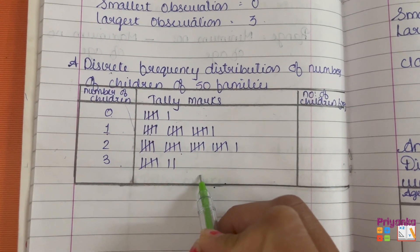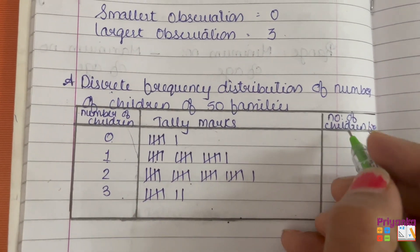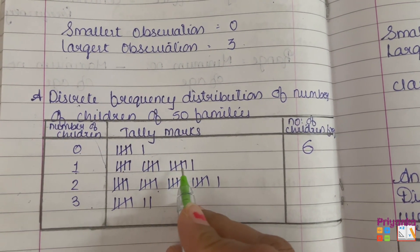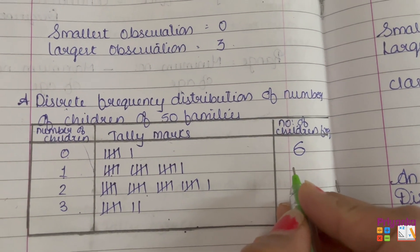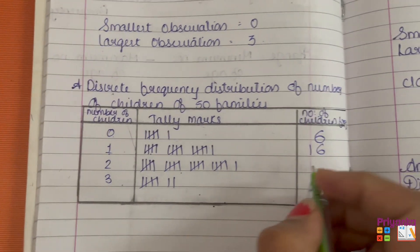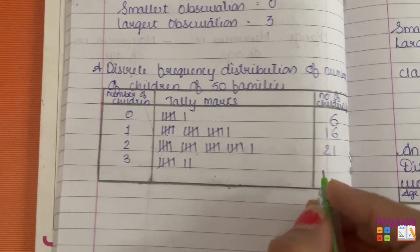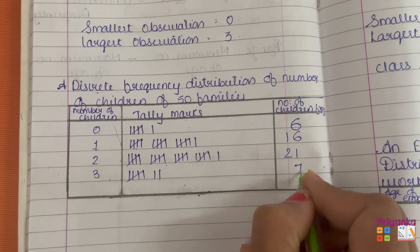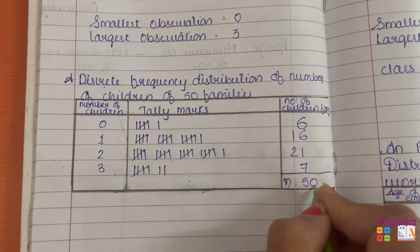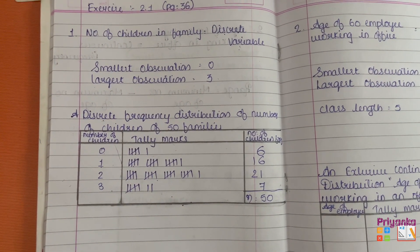After completing the tally marking, total each row. For example, a set of 5 plus 1 gives 6; 15 plus 1 gives 16; 20 plus 1 gives 21; 5 plus 2 gives 7. The grand total comes to 50. This is how you present a discrete frequency distribution.